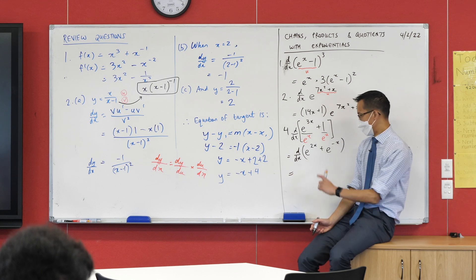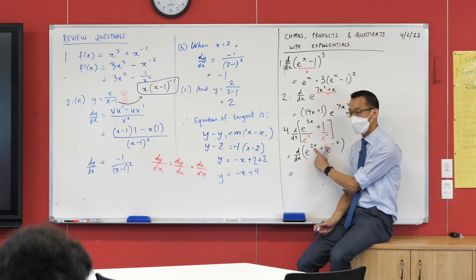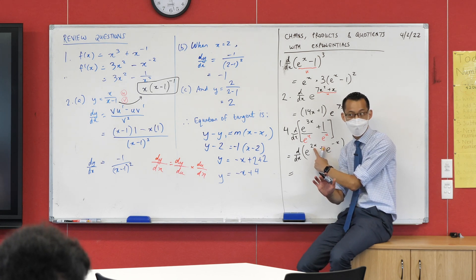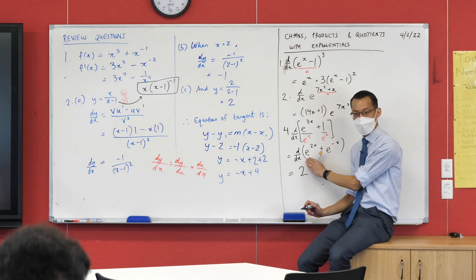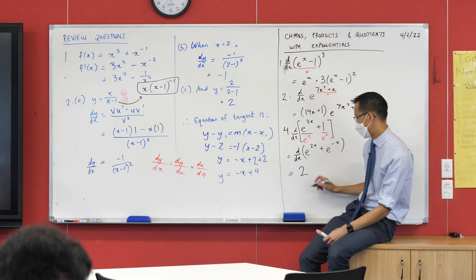This one here—it's just like the question we did, question two. Here's my u: 2x. What's its derivative? Just 2. And then I've got e to the power of something. E to the power of something just becomes the same thing—it doesn't change. Like so.